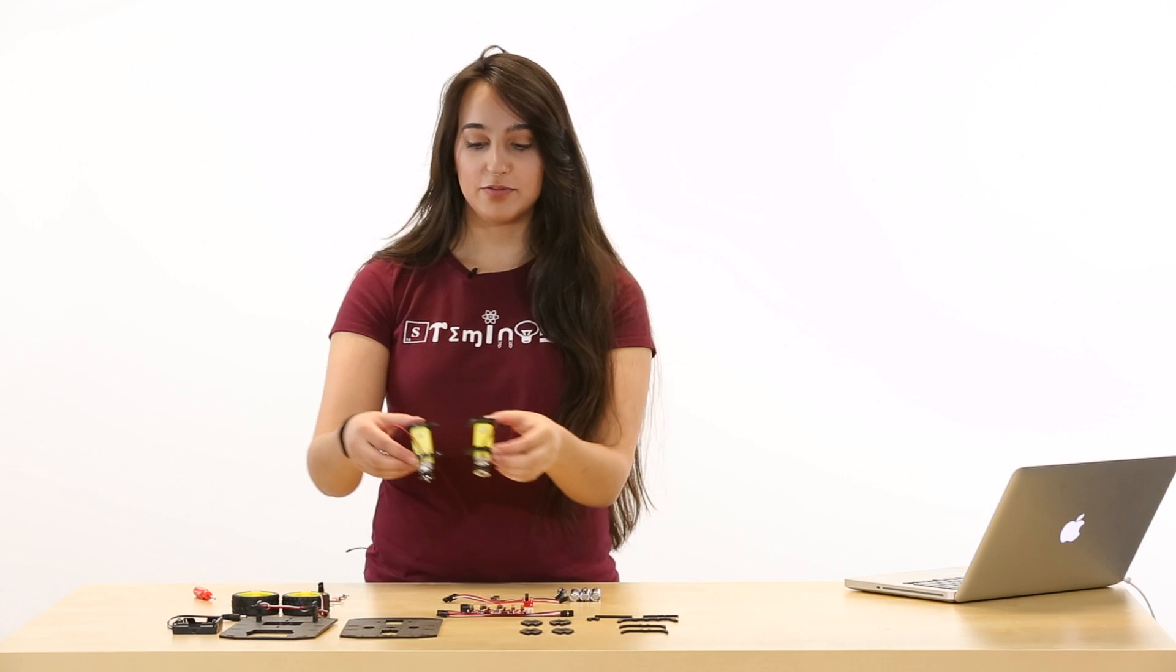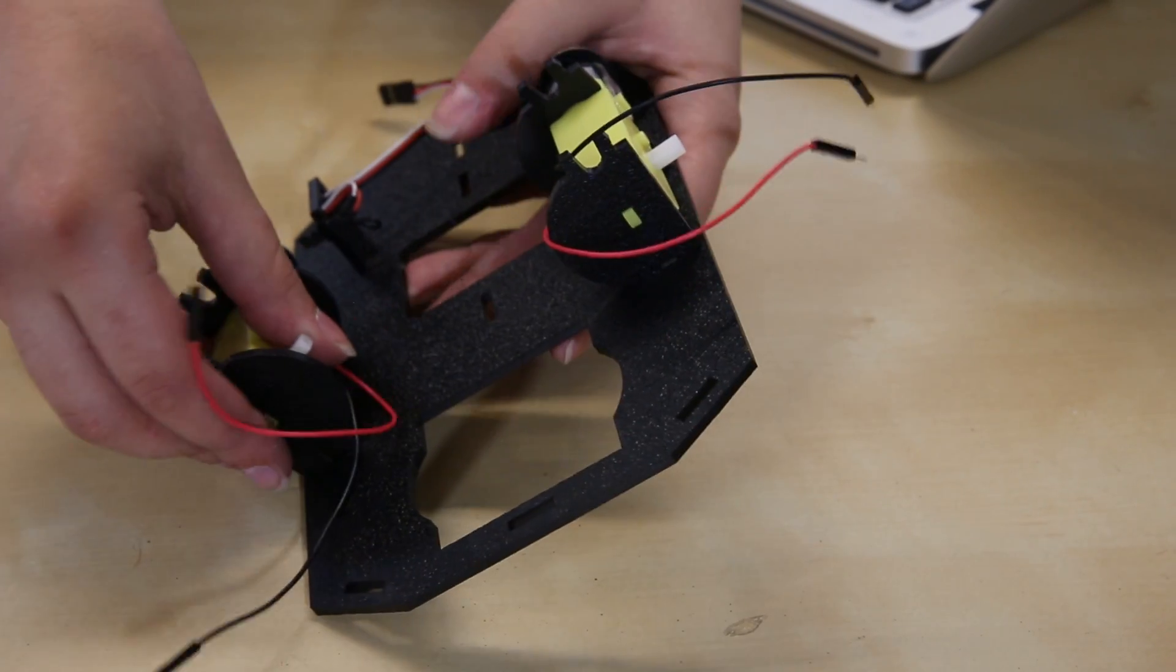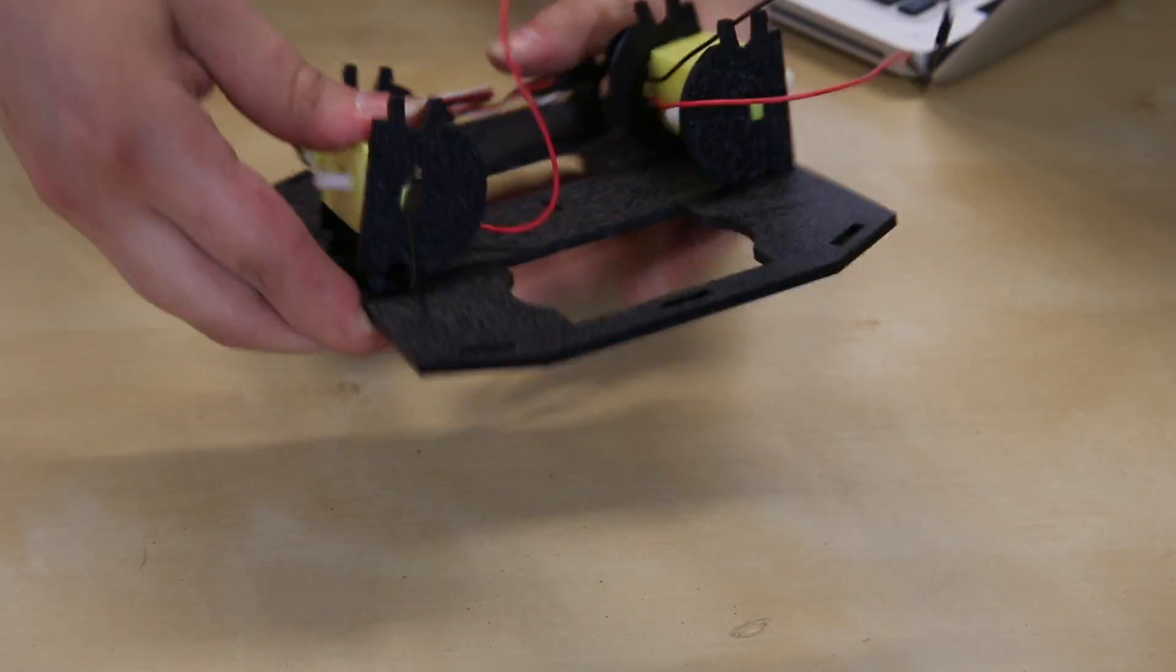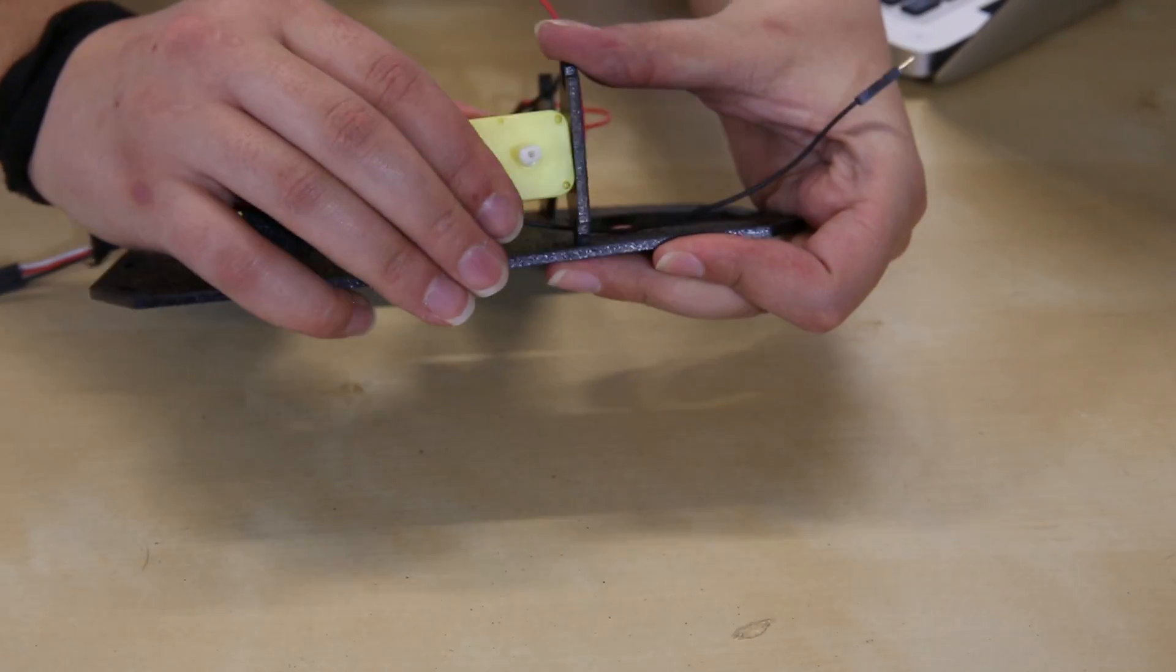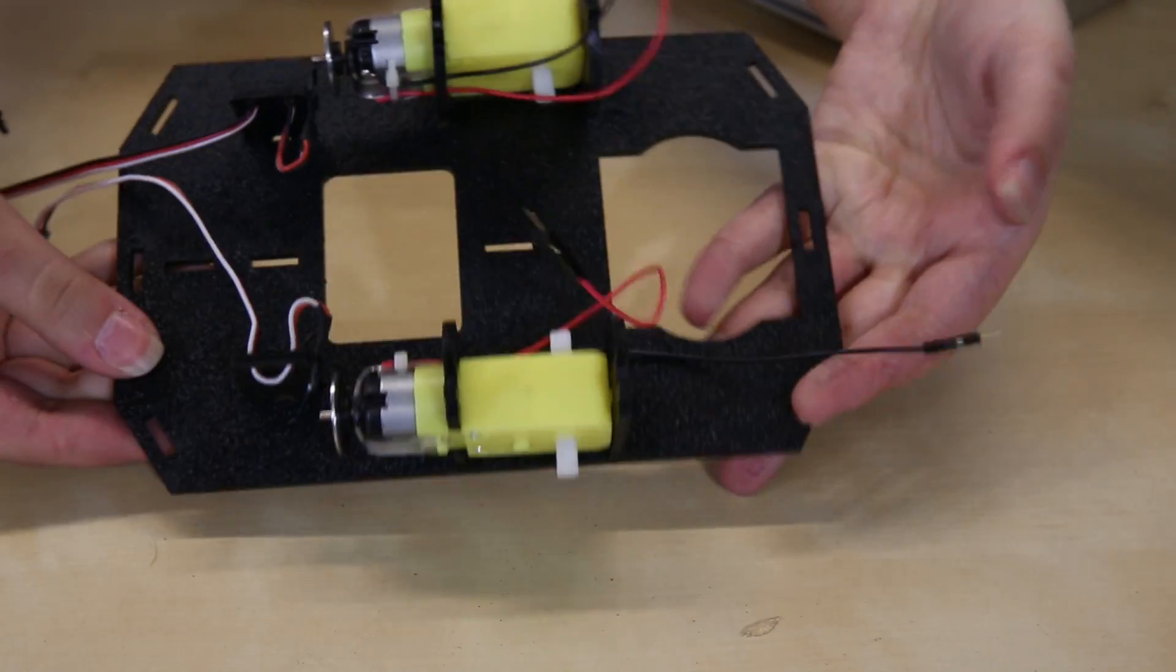Now that we've got our rear and front plate on our motors, we're going to attach these to our base plate. You want to make sure that the flat side is facing out and of course your magnet encoder is facing your Halifex sensor.